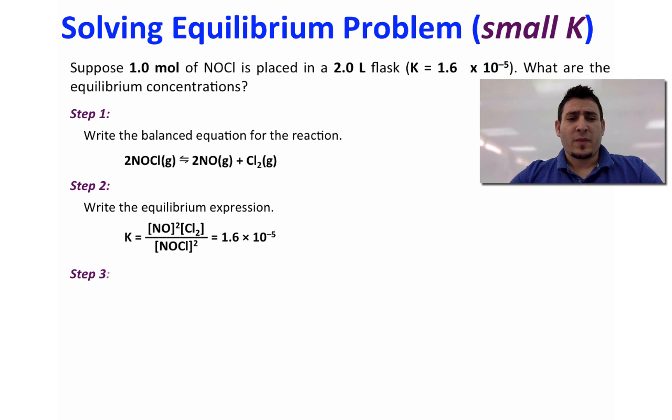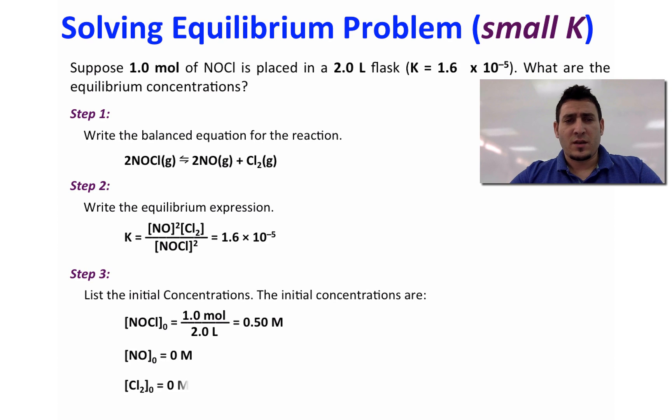In step 3 you list the initial concentrations. Now of course we only have the reactant at the beginning, so if we divide the number of mole by the volume we will find the concentration of NOCl. Now at the beginning before any reaction happens the concentration of NO and Cl2 will be equal to 0.